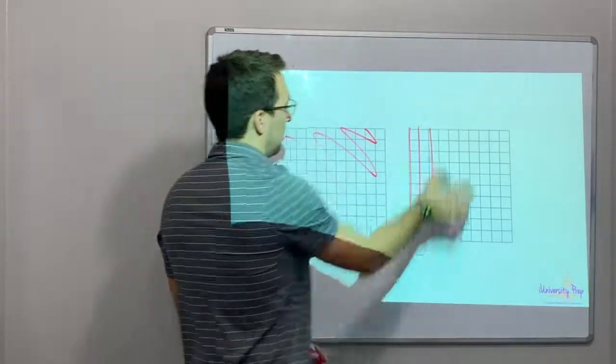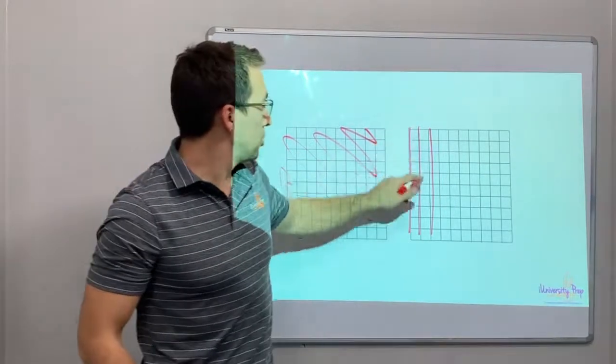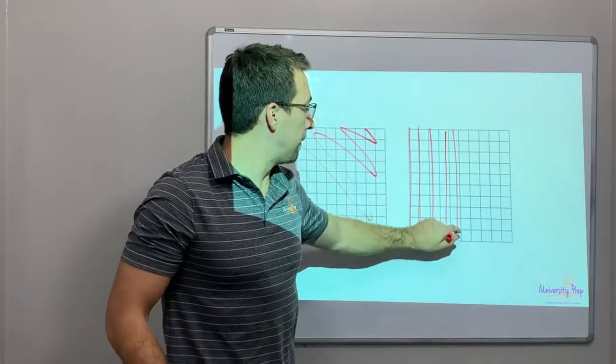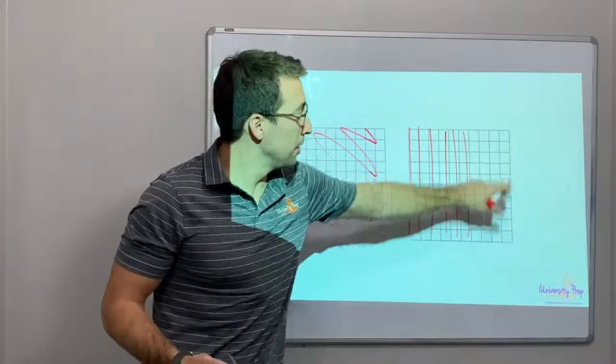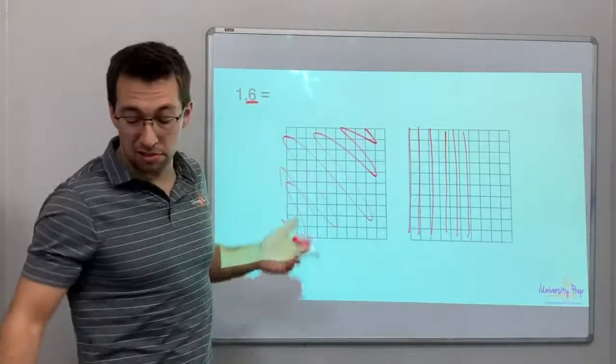Alright. So, one point six. One, two, one, two, three, four, five, six. It's that simple. Sometimes, you'll have a hundredths grid, but really, you only need the tenths. That's okay.